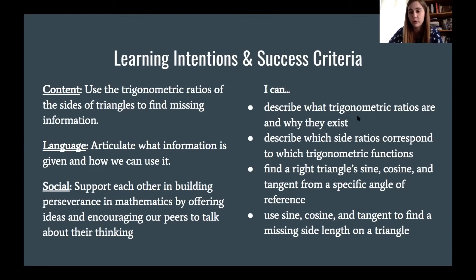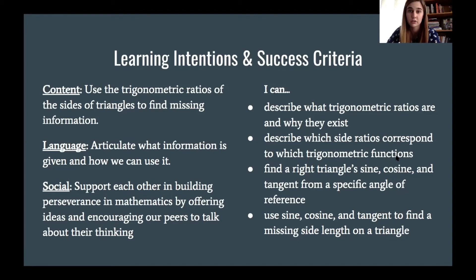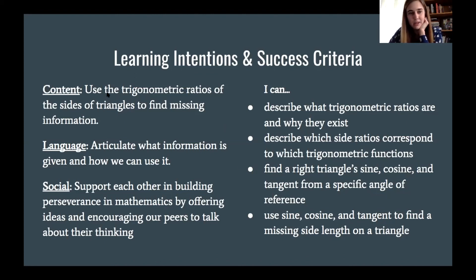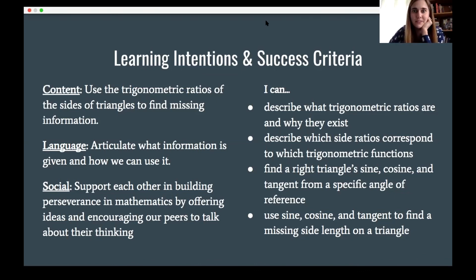Here are the ones you're going to rank yourself on. First, can you describe what a trigonometric ratio is and why they exist? Second, can you describe which side ratios correspond with which trigonometric functions — you'll need to memorize which sides you use for sine and which correspond to tangent. Third, can you find sine, cosine, and tangent in a right triangle from a specific angle of reference — it matters which angle we're referring to. Finally, use sine, cosine, and tangent to find missing side lengths on a triangle, which corresponds to our main content purpose.